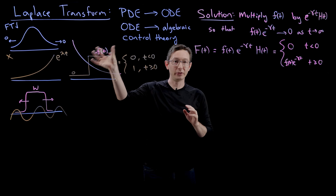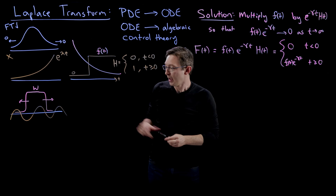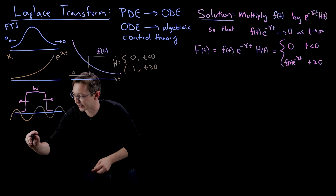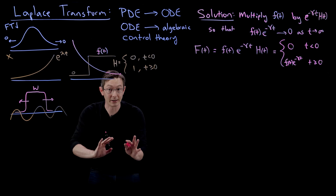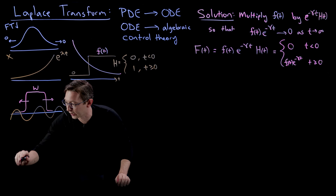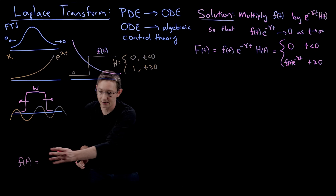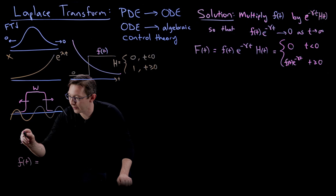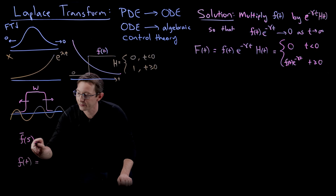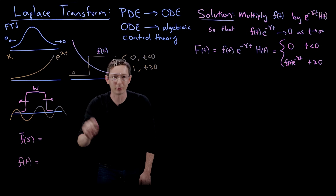So we take our badly behaved function, multiply it by a stable exponential and a Heaviside function, and now we're going to Fourier transform big F. The Laplace transform of little f is the Fourier transform of big F. I'm going to write down my Laplace transform pair — just like we write down our Fourier transform pair — where f of t equals some inverse Laplace transform, and f bar of s equals my Laplace transform.